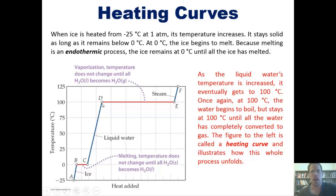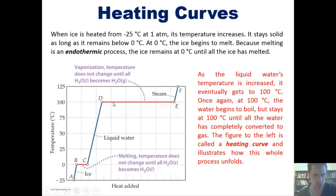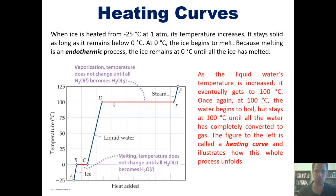As the liquid water's temperature increases, it eventually gets to 100 degrees Celsius — and this entire time it remains liquid. At 100 degrees Celsius, much like we saw at zero degrees Celsius, we start to see a phase change. The liquid water begins to boil; however, the temperature does not change right at 100 degrees Celsius. Any additional heat energy does not go toward raising the temperature.